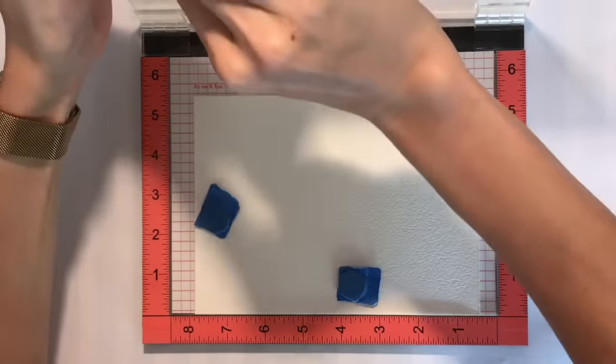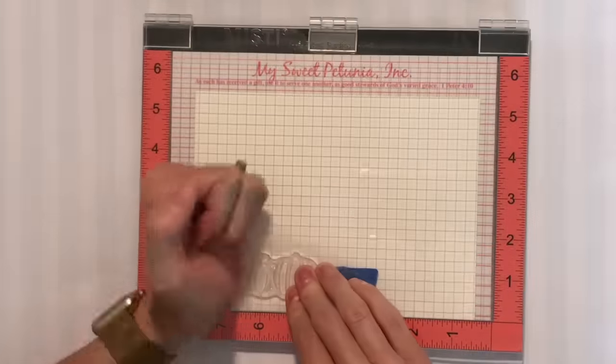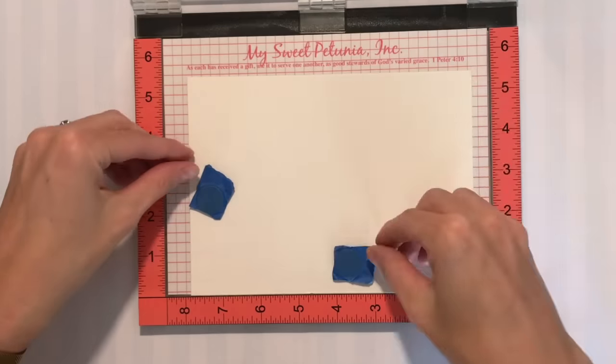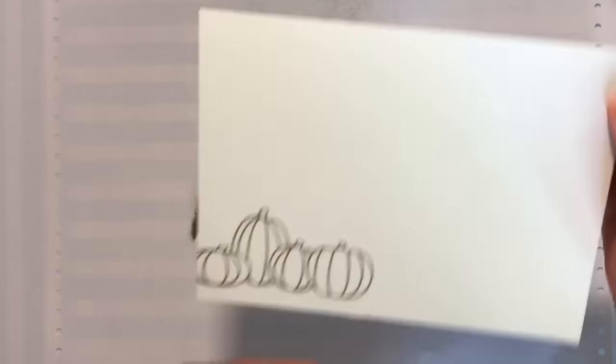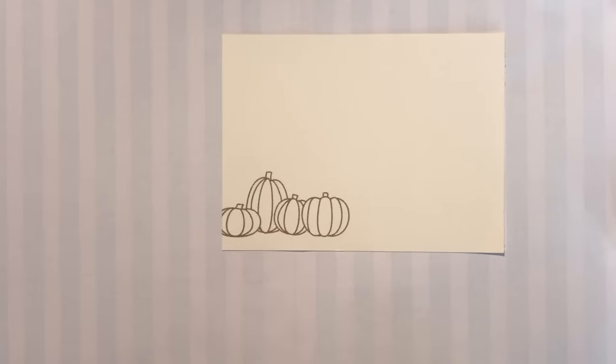I am using embossing ink because I will gold emboss these pumpkins. Stamped them twice through so a nice clear image and now I'm going to pour over my embossing powder, shake it off, and then take it over to my heat tool to set that embossing powder.